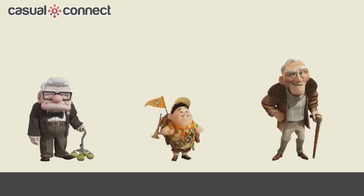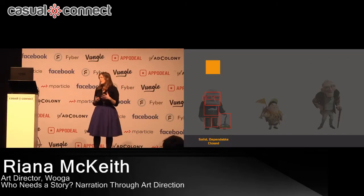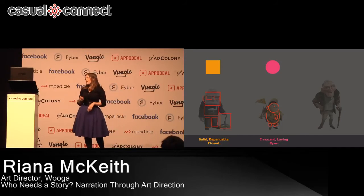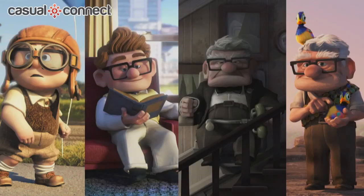Lastly, shape language. In Pixar's Up, Carl — our main protagonist — is all squares: dependable, close, but not very open yet. Russell, the fun-loving buddy, is all circles everywhere. The antagonist is all triangles, tilted and uneven — it feels uncomfortable. Like Lucas, Pixar doesn't just rest on a good underlying structure — they use it throughout the film to support the story. You can see Carl's development from start to finish: beginning as a more rounded character, becoming very square, then as he finishes his journey some of that roundness comes back.